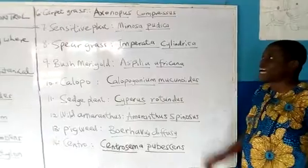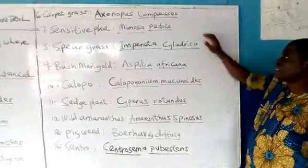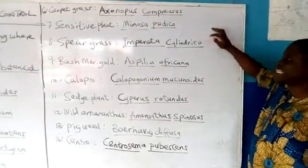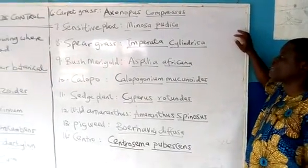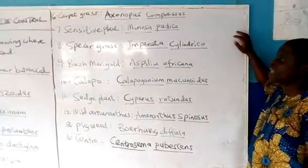Then we have Speargrass. Speargrass is called Imperata cylindrica.